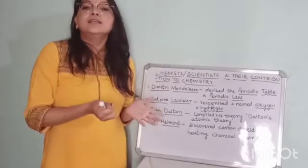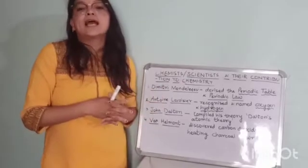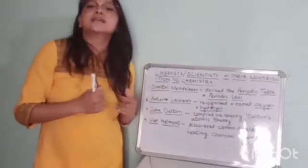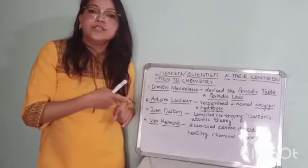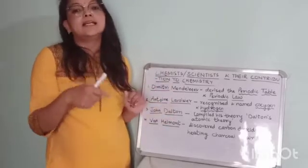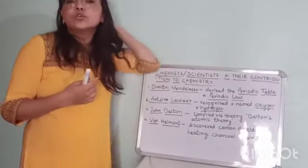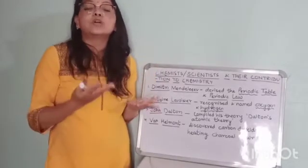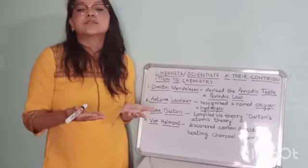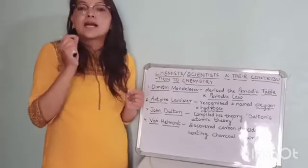The second scientist is Antoine Lavoisier. He was a French scientist, born in 1743, and he recognized and named hydrogen and oxygen gases. The third one is John Dalton — he was an English scientist who proposed Dalton's atomic theory: that matter consists of tiny particles called atoms.